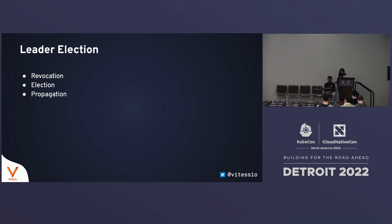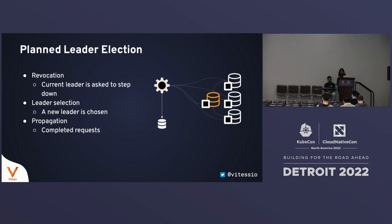Leader election has three distinct stages: revocation — revoking the previous leader; election — choosing a new leader; and propagation — any requests accepted by the previous leader and acknowledged to a client need to be propagated by the new leader to all followers or replicas. In a planned leader election, revocation is much simpler: because the current leader is still available, you just ask them to step down before selecting a new leader. It's an orderly transition, and the system ensures any completed requests get propagated to all replicas.